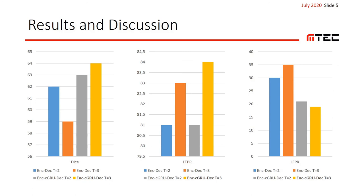Here you see our results on the test set. We compare the normal encoder-decoder with several encoder paths to our encoder convolutional GRU decoder architecture. For both methods, we consider 2 and 3 time points. In terms of metrics, we consider the DICE score, lesion-wise true positive rate, and lesion-wise false positive rate. Lesions are determined by 3D connected components in the binarized prediction maps. Our proposed architecture performs best across all metrics when using 3 time points. Interestingly, it also performs very well when using only 2 time points, in particular in terms of the lesion-wise false positive rate.